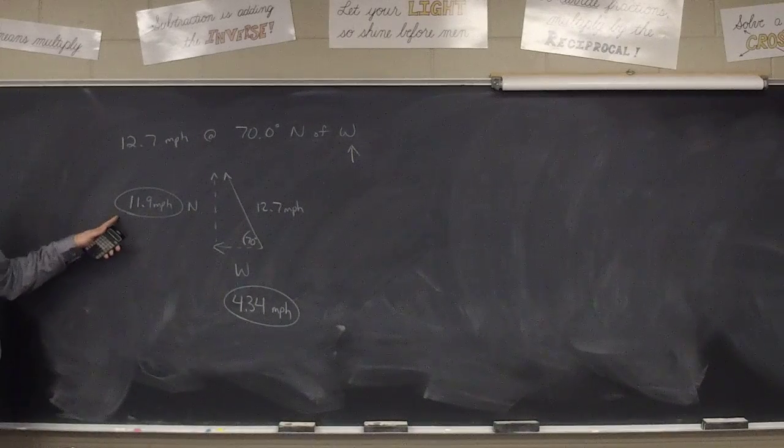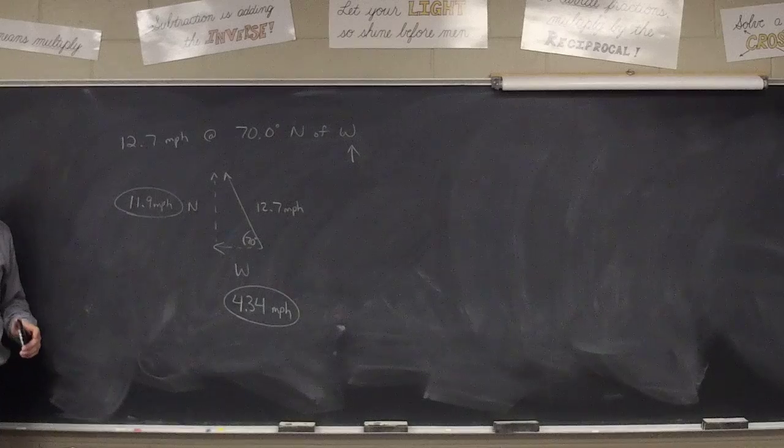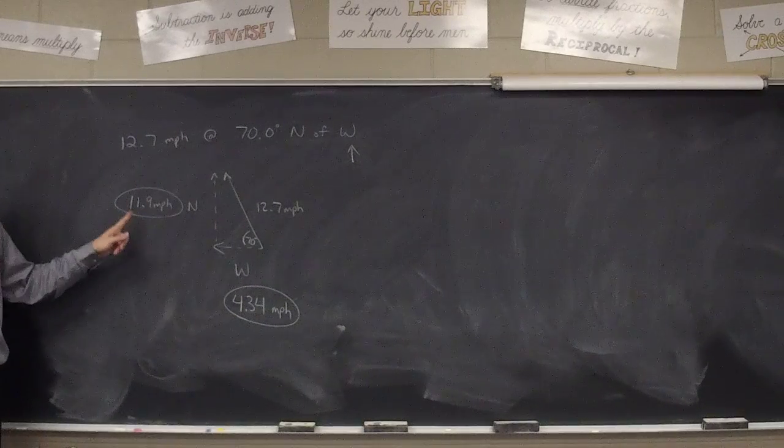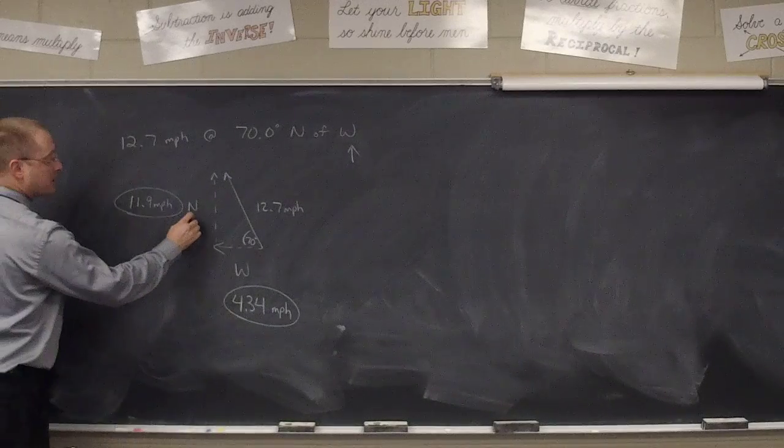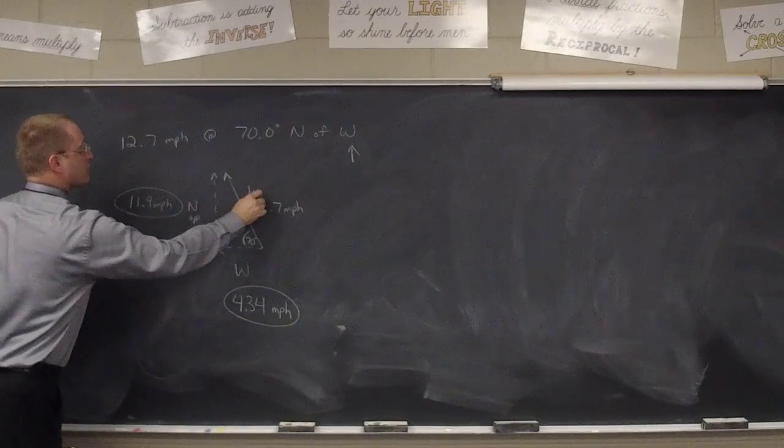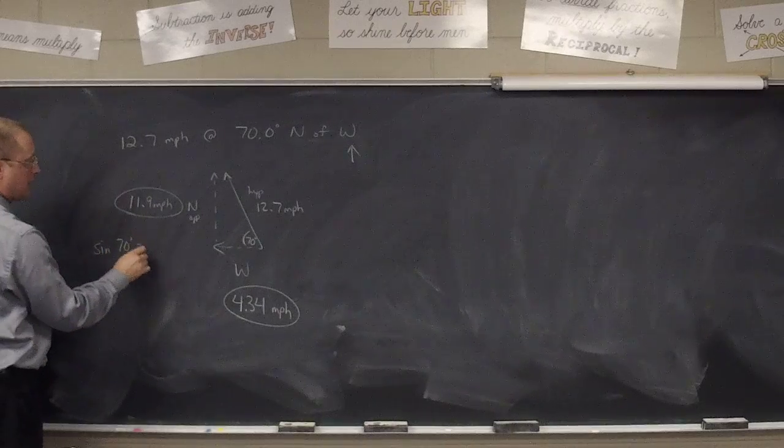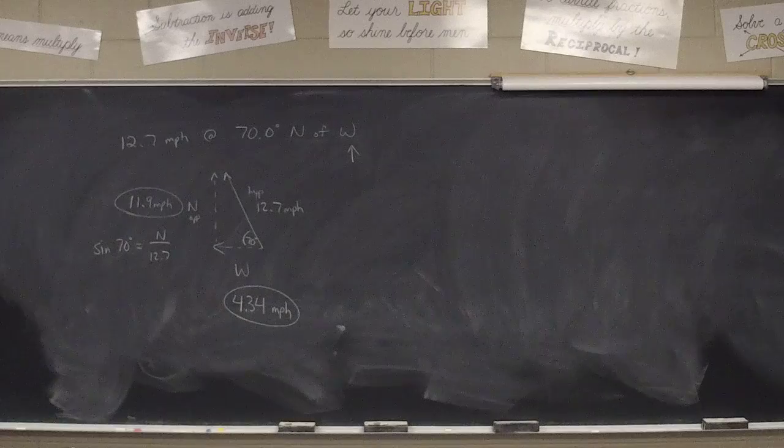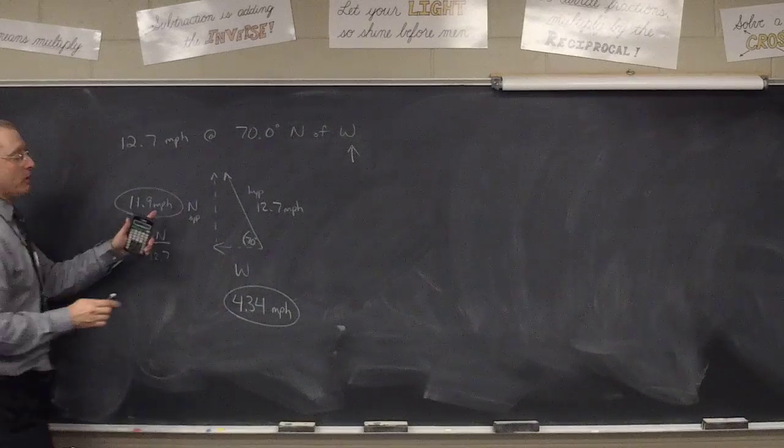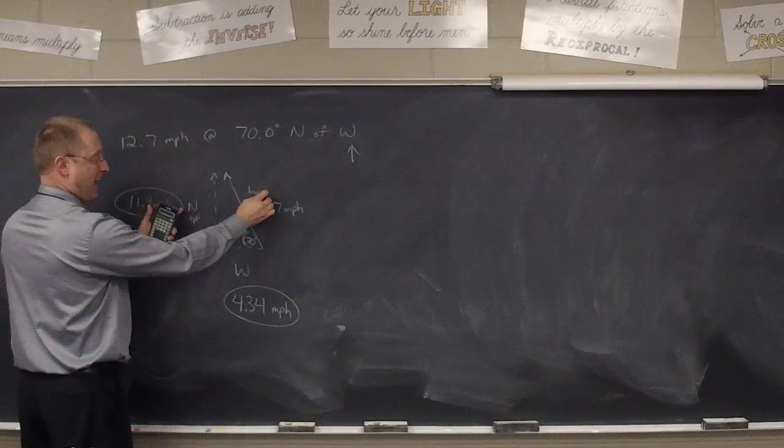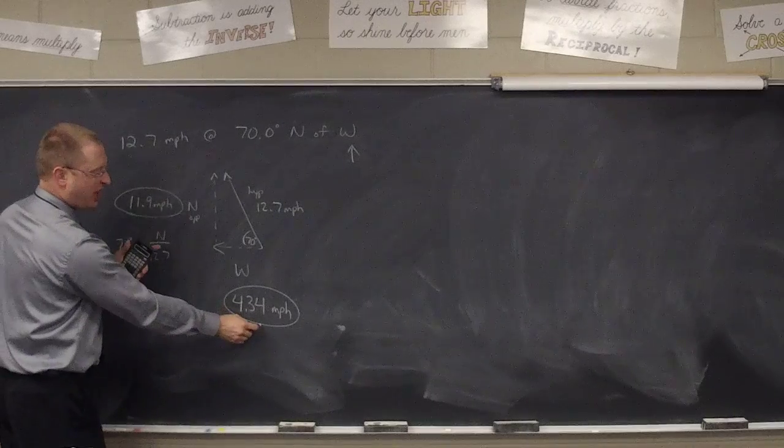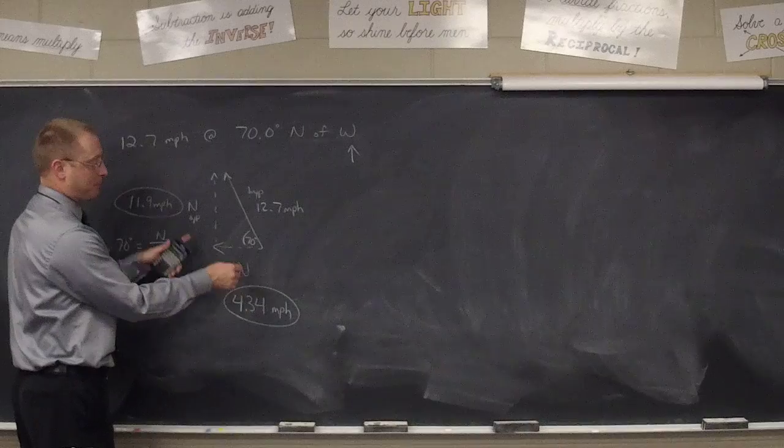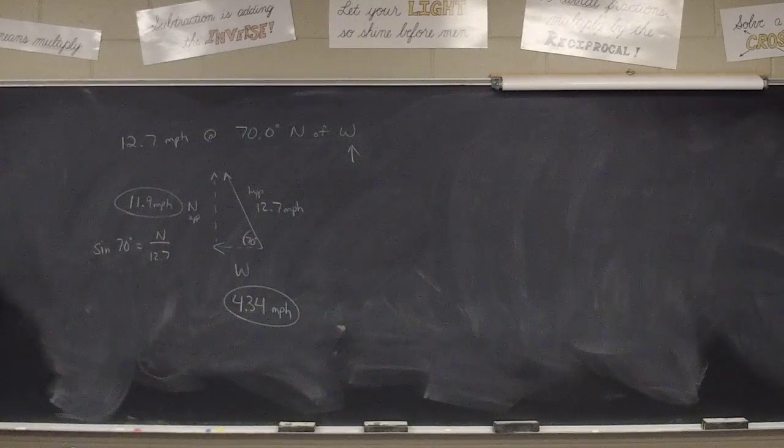So you get 11.9 miles per hour north and 4.34 miles per hour west. Did you not get the north? Did you say that the opposite over hypotenuse, so the sine of 70, is the north over the 12.7? What did you have? Oh, tangent, okay. Remember, this is the hypotenuse, so we're finding north, we have the hypotenuse. Now, you could try to use this, but if you screwed this up, you're doomed to the next one. So I would not use tangent, because I don't want to mess up a number and use a messed up number to get a more messed up second number.